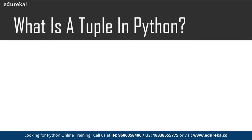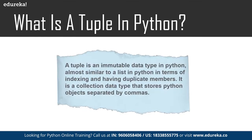A tuple is an immutable data type in Python and it is almost similar to a list in Python in terms of indexing, which means we can access the elements of a tuple using indexes. They can also have duplicate members just like a list, and it is a collection data type that stores Python objects separated by commas.